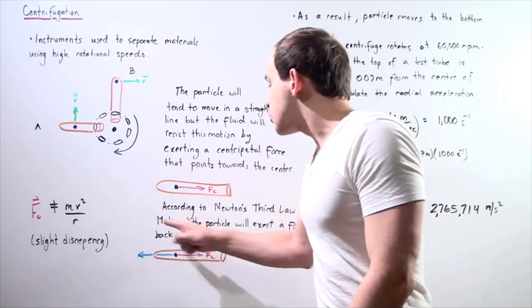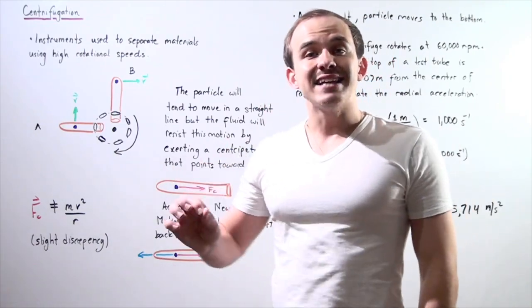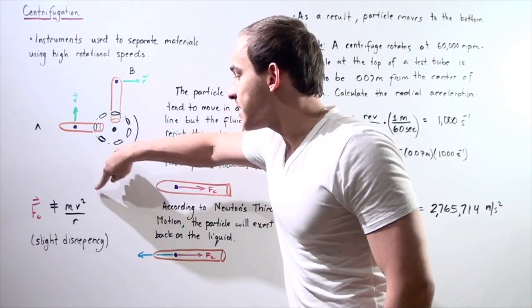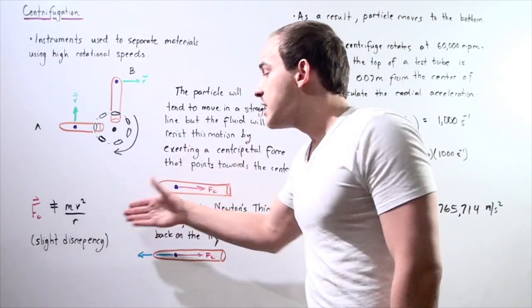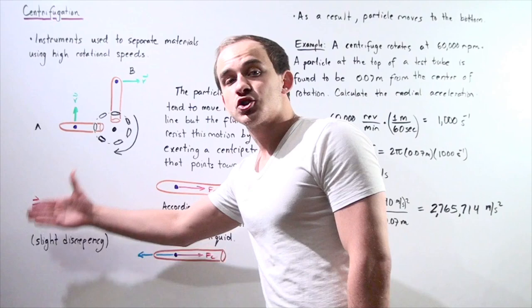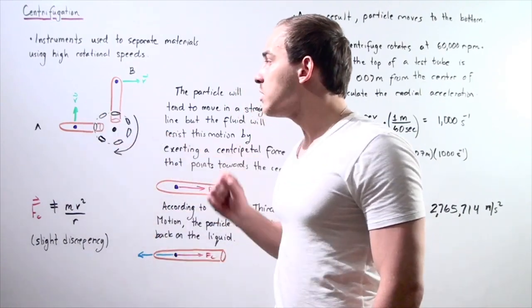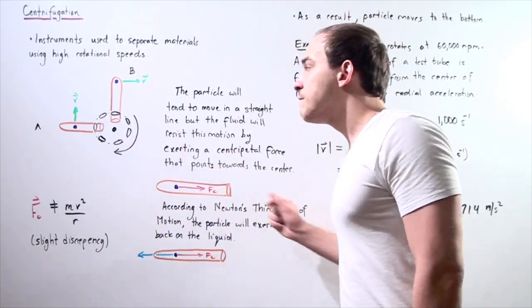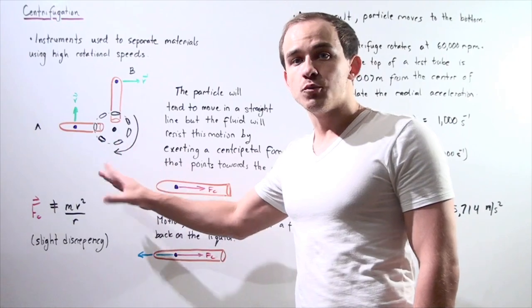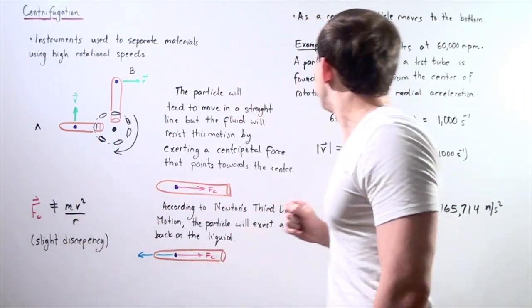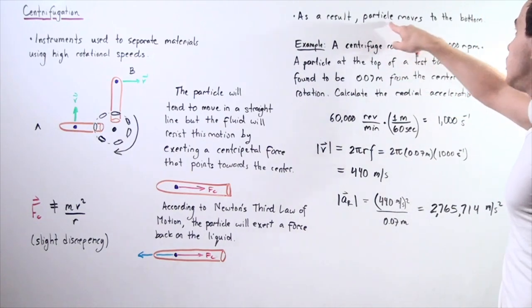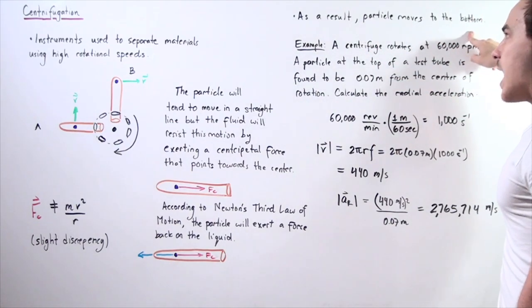Note that our centripetal force does not exactly equal this force, it does not exactly equal mass times V squared divided by R. So because of this slight discrepancy, our particle will tend to move further down our test tube. Once again, as a result of this discrepancy in force, the particle moves to the bottom of our test tube.